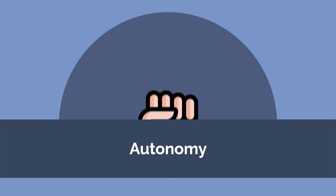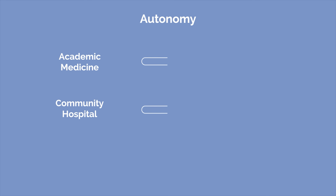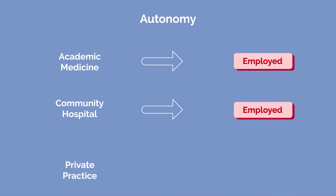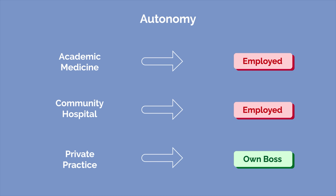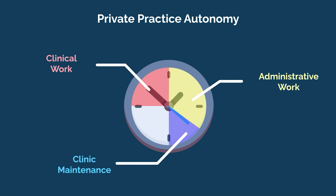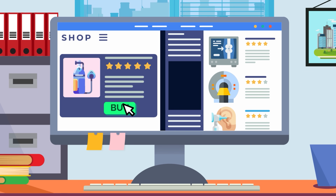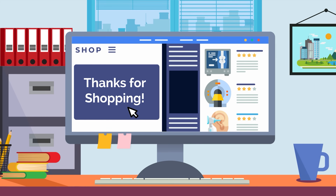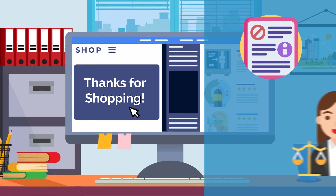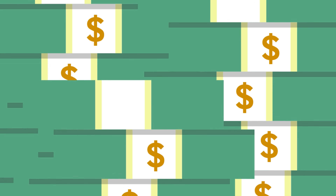Another important difference is independence and autonomy. If you're in academic medicine or a community hospital, you're most likely employed by the hospital. In private practice, you're the boss — you choose how you run your practice, and administrative tasks are more straightforward. For example, if you need new equipment, there are no hospital guidelines to delay or deny your request. You don't have to deal with the politics of admin or hospital committees. Private practice doctors also make more money than their employed colleagues.